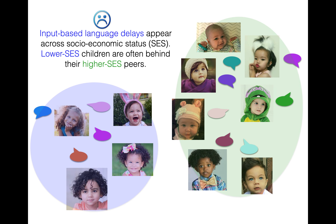One thing we know is that input-based language delays appear across socioeconomic status — SES moving forward — where lower SES children are often behind their higher SES peers when it comes to language development. For just a couple of examples: the development of vocabulary, like how many words they know and the types of words they know, tends to lag behind. And even language processing ability — how quickly they can leverage language information from their input — also seems to lag behind. These are examples of language delays that appear to be based on the types of input these children are getting.